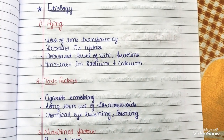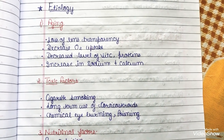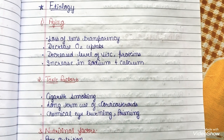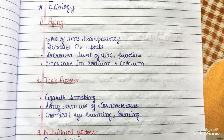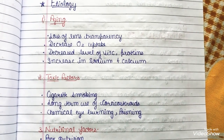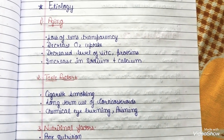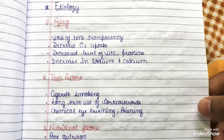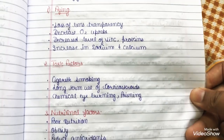Next, we are going to talk about toxic factors. These include cigarette smoking, long-term use of corticosteroids, and chemical eye burning and poisoning from harmful chemicals or medicines.